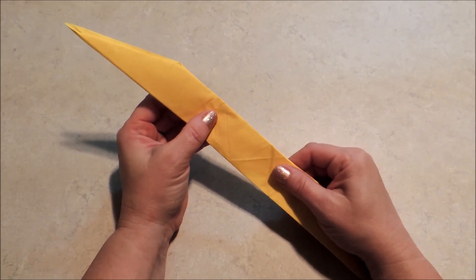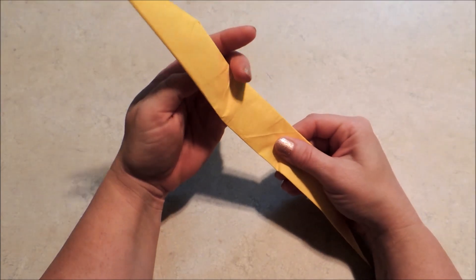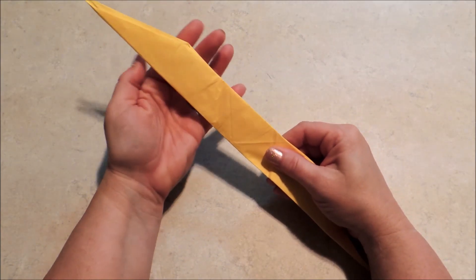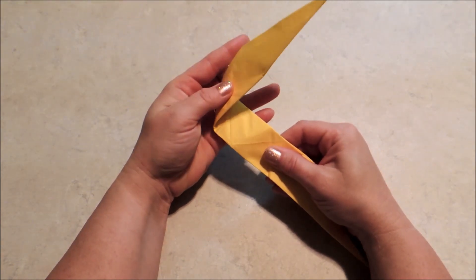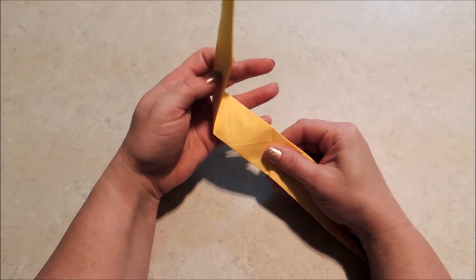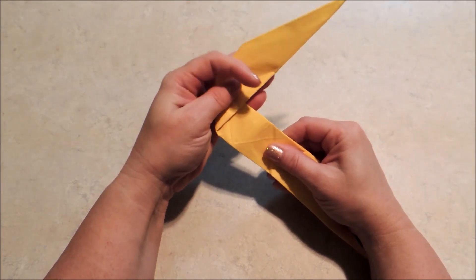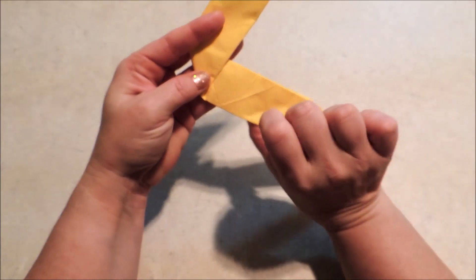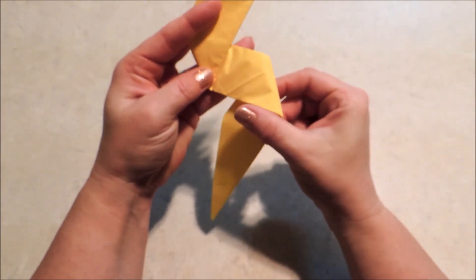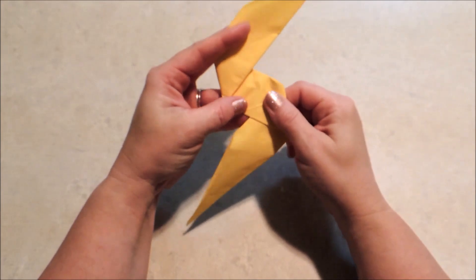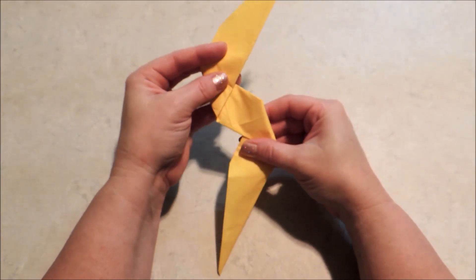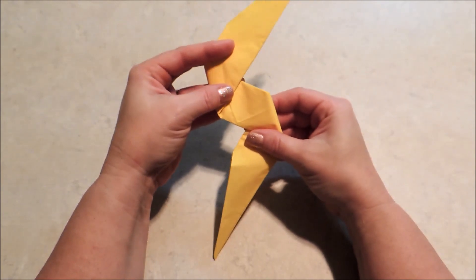And from here, I'm just going to eyeball my folds. I'm going to take this top one over to the left and fold it forward over toward the right. And then the bottom piece, I'm going to fold it under toward the left. And you can adjust that until you get the shape of lightning bolt that you want.